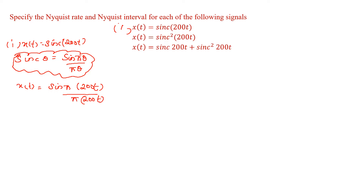Comparing both equations, we identify that ω = 200π. Since ω = 2πf, we get 2πf = 200π, so the π cancels and we obtain f = 100 Hz.